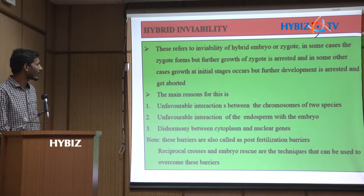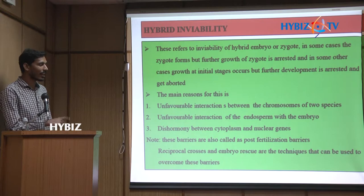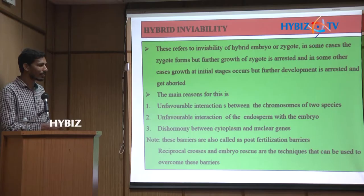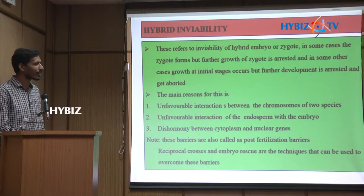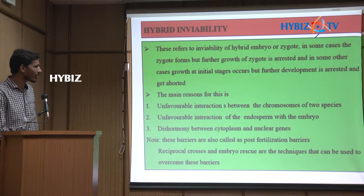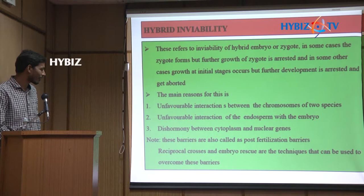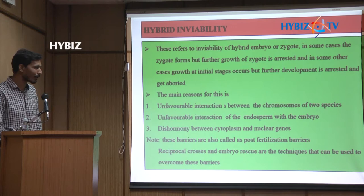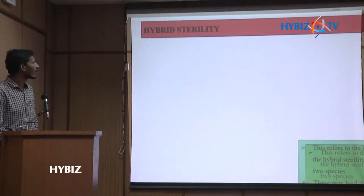Hybrid inviability refers to inviability of the hybrid embryo or zygote. After overcoming pre-fertilization barriers, we may get hybrid inviability where the zygote forms but won't develop further. The reasons are unfavorable interaction between the chromosomes of two species, unfavorable interaction of endosperm with the embryo, and disharmony between the cytoplasm and nuclear genes. These barriers are called post-fertilization barriers; reciprocal cross and embryo rescue are techniques to overcome them.